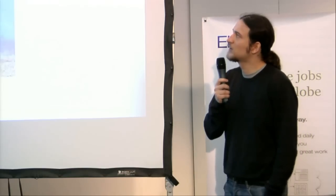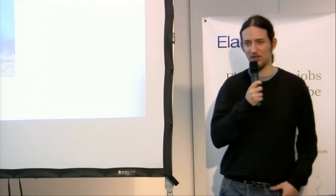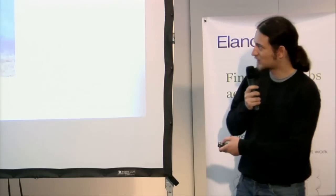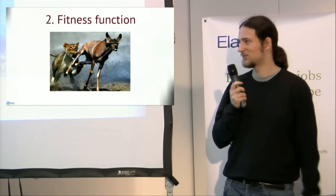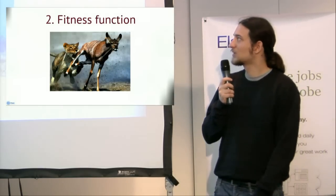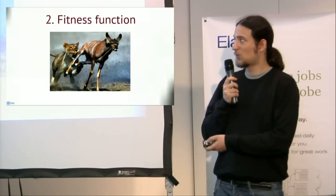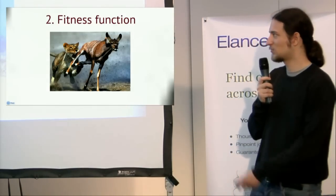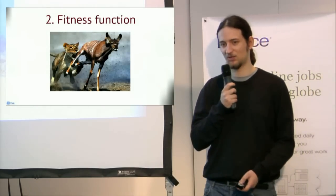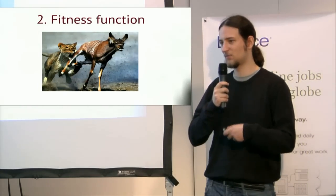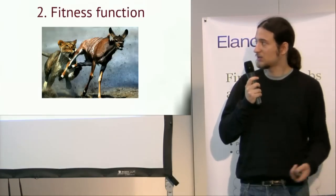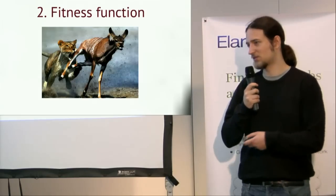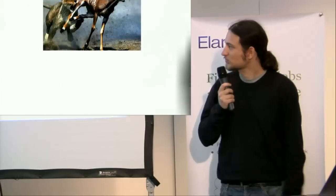The second thing we need is a fitness function. What is a fitness function? It's a method to check how good the solution is. In our case, on the photo, which one runs faster? That would be the fitness function — the speed of running, and maybe the cleverness of the escape route. The slower will either be hungry or be eaten, so the slower one will be eliminated. Only the better will survive and be able to breed to create the next generation, and hopefully the next generation will be even faster.